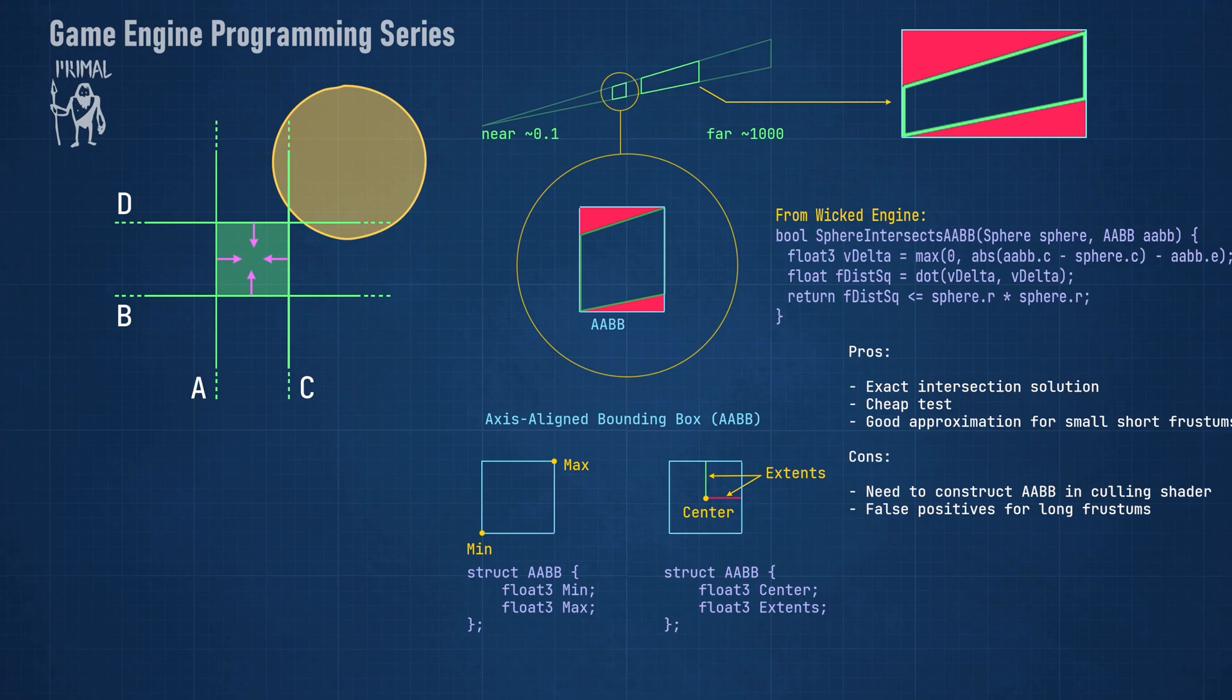However, as we saw in the implementation, we do need to construct a box for each sub-frustum, which takes some effort. And it can result in a lot of false positives for longer frustums.